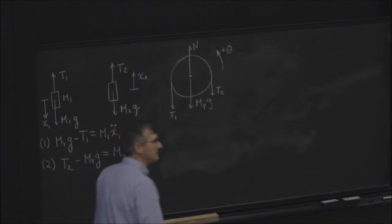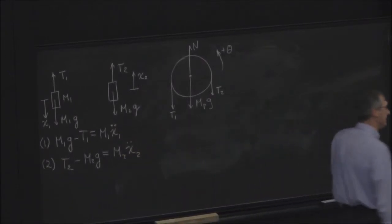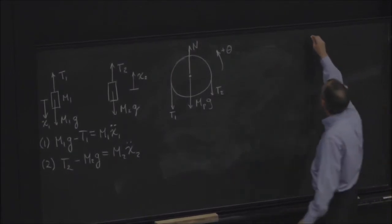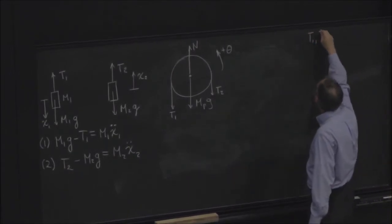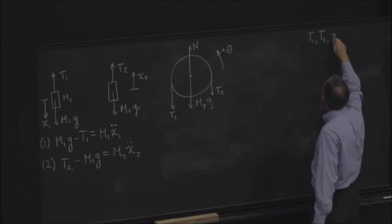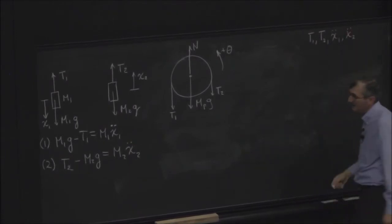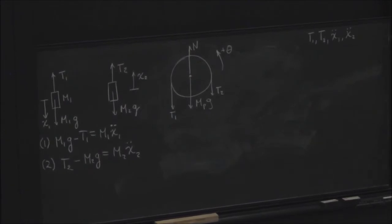Equation two, same story over there, except now positive is up. So I get T2 minus m2g is equal to m2 x2 double dot. Maybe I better keep a list of unknowns, right? So far, what do I have? T1, T2, x1, x2. I got two equations and four unknowns, not looking good so far.